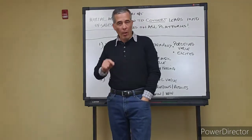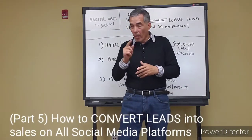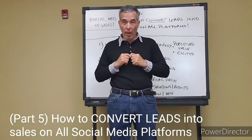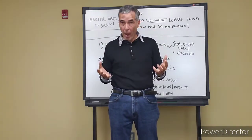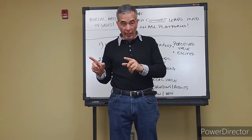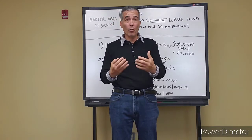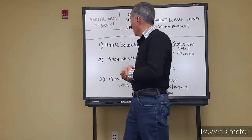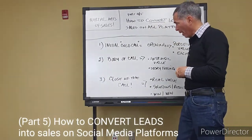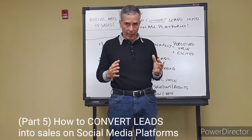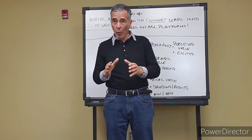Welcome back to the Martial Arts of Sales — part five of a five-part series on using my social media investment strategy to get qualified leads, convert them into sales, and increase your monthly cash flow. If you've done the first four steps, you'll be very happy with the results. Part five is how to convert leads into sales on all of your social media platforms. I call this the OBC — the Opening, the Body, and the Close. I've been using this straight-line method for 30 years and it works.